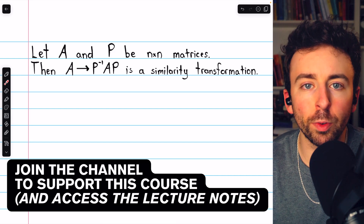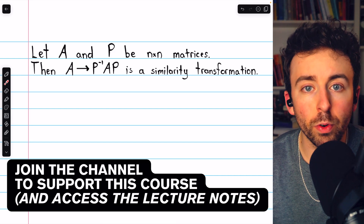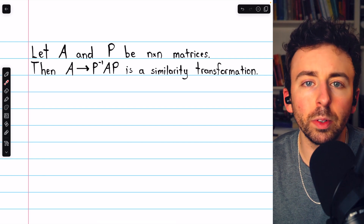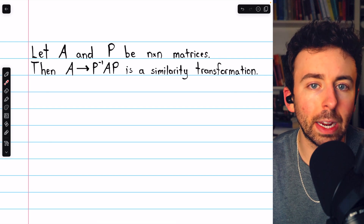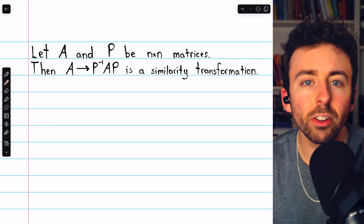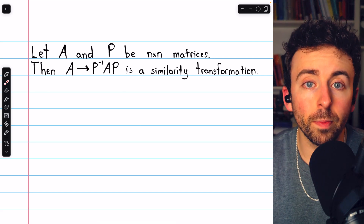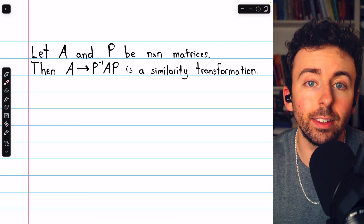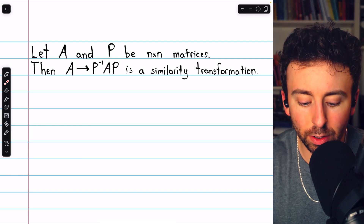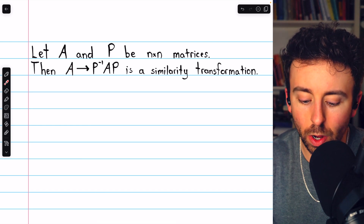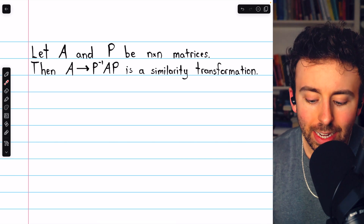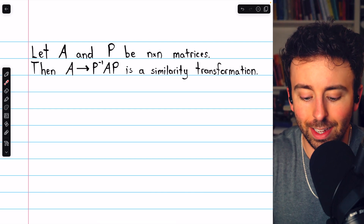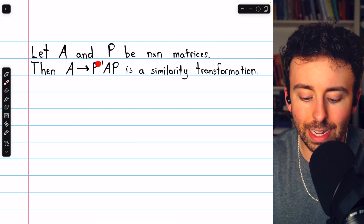We're going to go over what similar matrices are. We'll see and prove some of the important properties that similar matrices have, and we'll finish with a couple of computational examples observing that two matrices are similar and showing that some matrices are not similar. If A and P are n-by-n matrices and P is invertible, then transforming A into P inverse times A times P is a similarity transformation, because we say the matrix A is similar to P inverse AP.